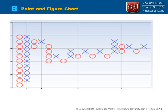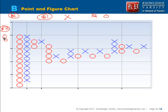A point and figure chart is used to determine security prices. You choose a box size — typically one dollar — meaning that if the stock price increases or decreases by one dollar, you plot it. If the stock price increases by one dollar, you put a cross (shown in blue); if it decreases by one dollar, you put a circle (shown in red). If the price decreases by two dollars, you put two circles; by five dollars, five circles. Importantly, circles stay in one column and crosses stay in another — you do not mix them.